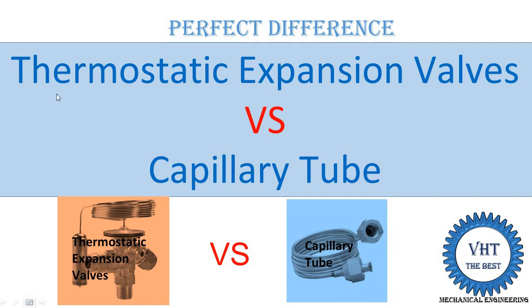In this video I tell you the difference between thermostatic expansion valve and capillary tubes. Both devices are used in refrigeration and air conditioning systems for the expansion process, that is isenthalpic expansion. I will tell you which condition each is used in and which is suitable for a particular system, covering eight different points.